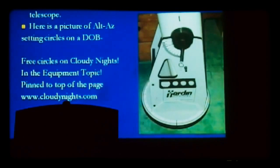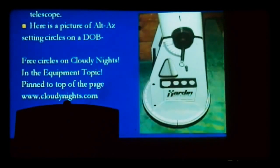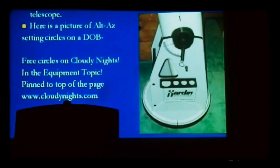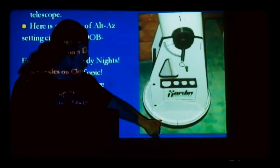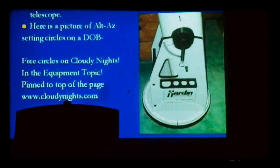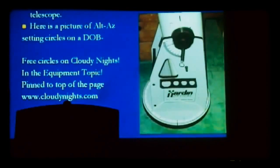Check out cloudyknights.com and look at the equipment topic — the setting circles should be pinned to the top of the page. They have different circles for different-sized Dobs, but those are just general guidelines. The files are Adobe PDFs, so you may need to scale them slightly larger or smaller. I had to shrink mine a bit. It doesn't have to be perfect — err on the side of slightly smaller, recessed from the edge. Print it first before laminating to see if it fits, and cut it to size before laminating since they charge by the inch.